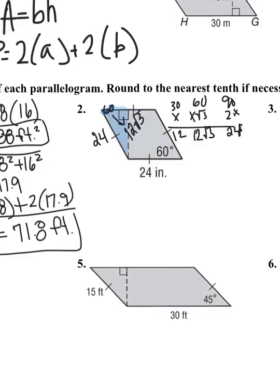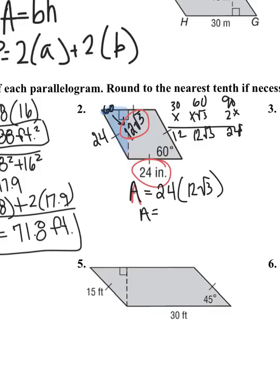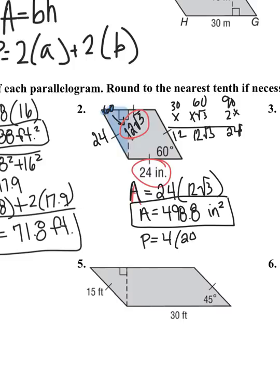Circling the base and height: area equals 24 times 12√3. Plugging into the calculator and rounding to the nearest tenths place, area equals 498.8 inches squared. For perimeter, since all sides are equal, it's just 4 times 24, so perimeter equals 96 inches.